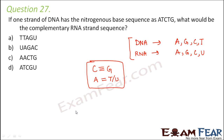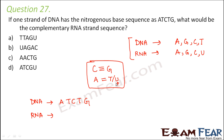So if the DNA sequence is A, T, C, T, G, and you have to find the complementary RNA sequence: A pairs with U; T pairs with A; C pairs with G; T pairs with A; G pairs with C. Therefore, the complementary RNA strand sequence would be U, A, G, A, C. That is option B.